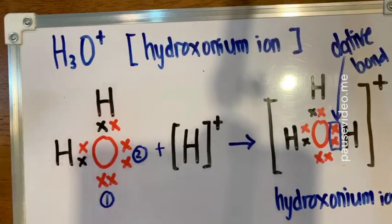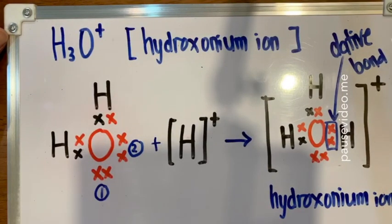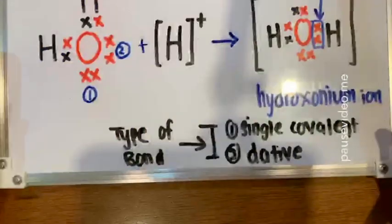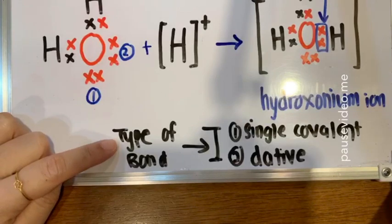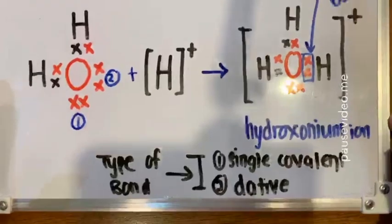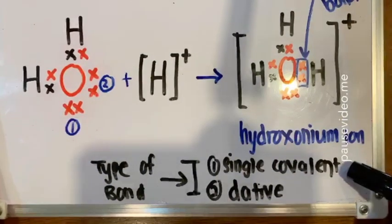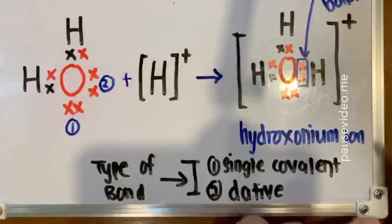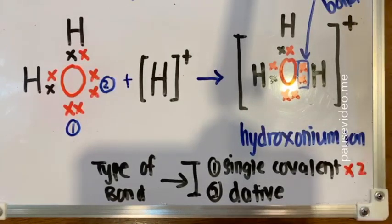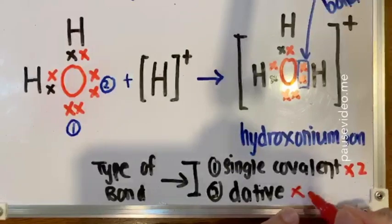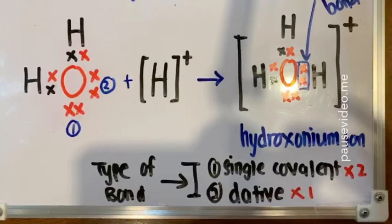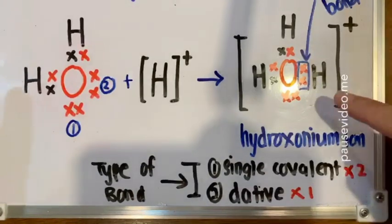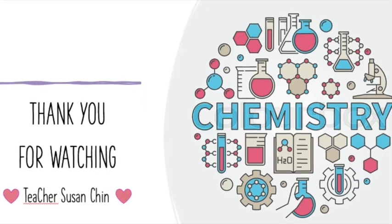If asked to identify the types of chemical bonds formed in the hydronium ion, there are two types. Number one, we have two single covalent bonds. These two single covalent bonds are formed between the hydrogen atoms and the oxygen atom by sharing one valence electron each. And lastly, there is one dative bond formed between the oxygen atom and the hydrogen ion, where the oxygen shares a lone pair into the empty valence electron shell of the hydrogen ion.